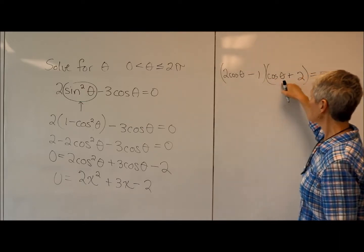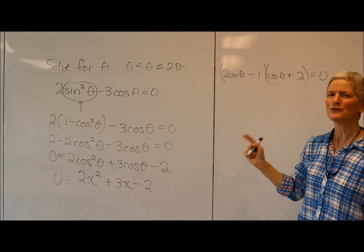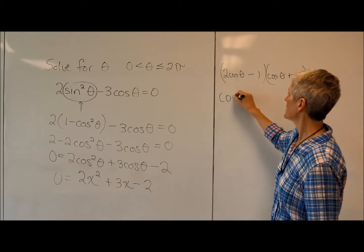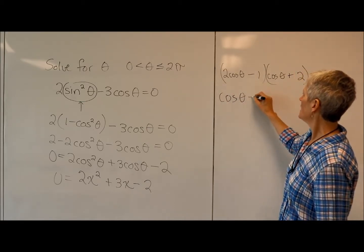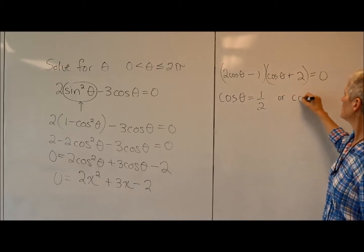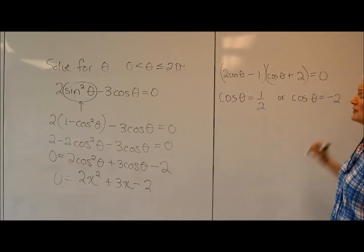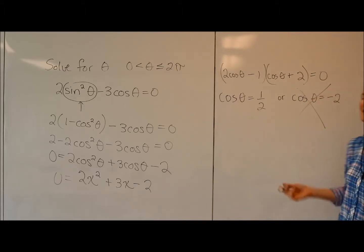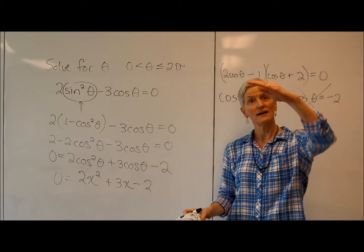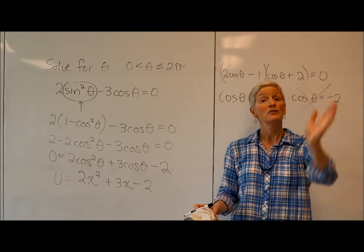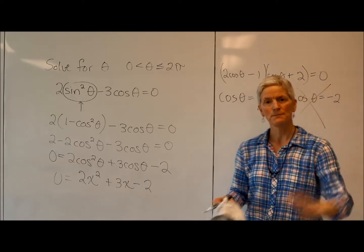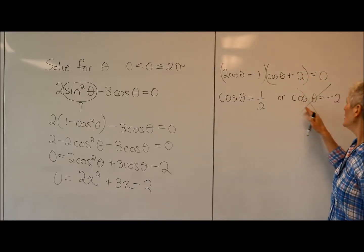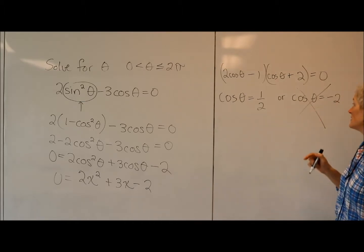All right, so now I have two things multiplied together that give me 0. That's that beautiful property of 0. One of those has to equal 0, or perhaps both of them. So that means the cosine of theta equals 1 half, or the cosine of theta equals negative 2. What? Well, that is insanity. The cosine of theta can't equal negative 2. If you recall, cosine, like the sine, is a nice sinusoidal curve. Its range is from negative 1 to 1. It's impossible, if you think about it, to have a cosine that's bigger than 1 or less than negative 1. So that is a dead end. That just leads us nowhere.